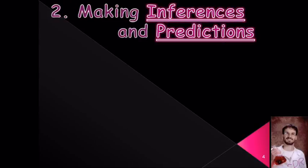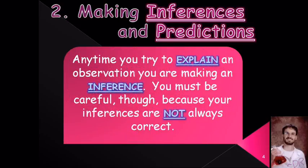The second skill that all scientists need — not only do you need to make observations like seeing, hearing, tasting, and touching things, you also need to be able to make inferences and predictions. An inference is when you try to explain something that you've observed — it's how our brains explain observations so that things make sense. For example, let's say you were shopping for a house, the realtor is showing you around, the house is empty, but you smell something. It smells really good, makes you feel at home.